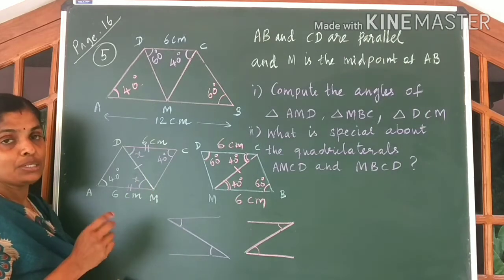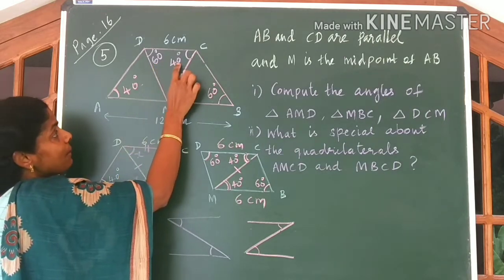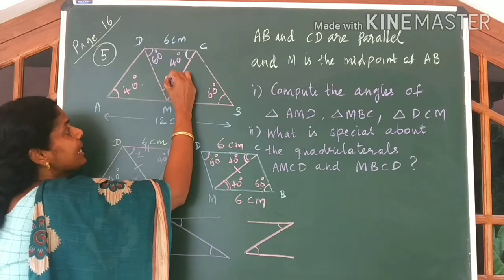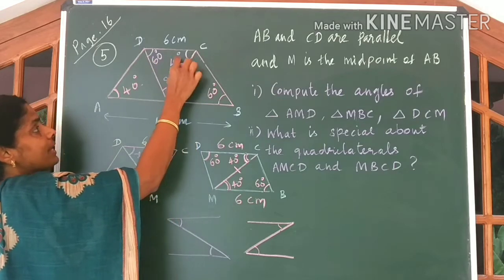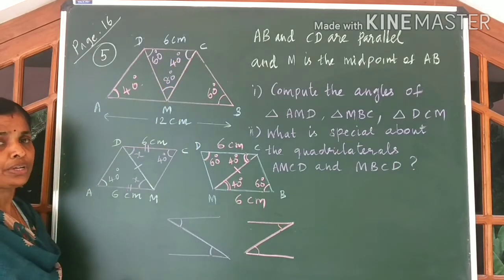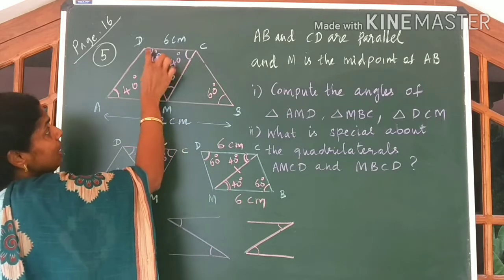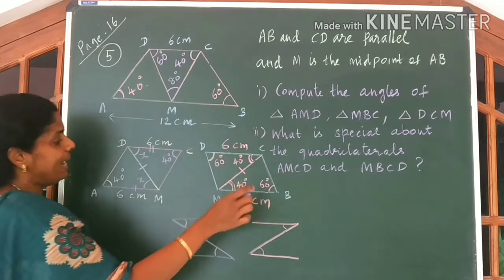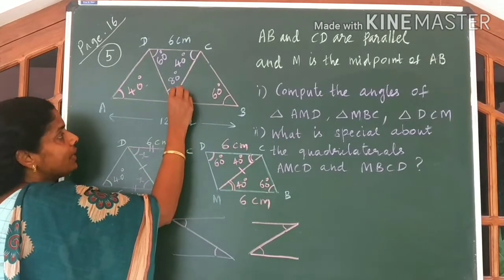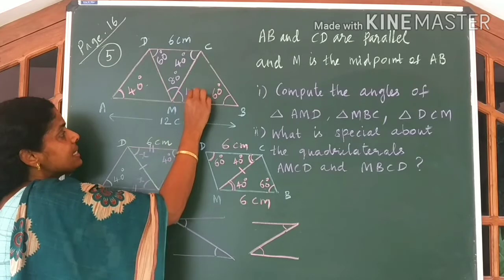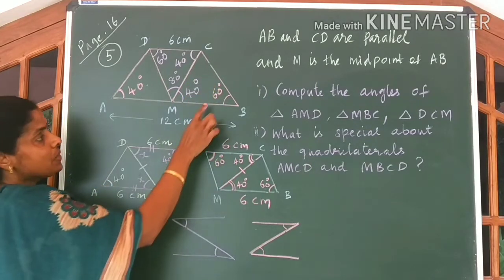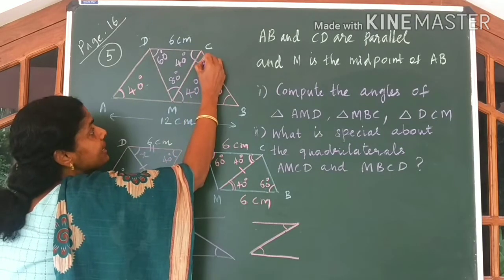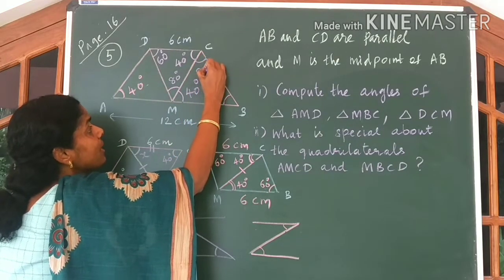Now we can write the other angles very easily. 60 plus 40 is equal to 100. Therefore, the third angle here is equal to 80 degrees. So we got the angles of this triangle. Again, look at this figure. CD and AB are parallel, and we know this angle to be 40 degrees. Already we have found this angle is equal to 40 degrees. So 60 plus 40 is 100, therefore the third angle is equal to 80 degrees.